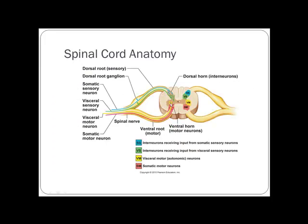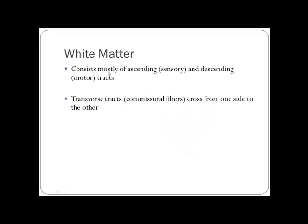White matter in the spinal cord consists of tracts. Ascending tracts carry sensory (afferent) information up to the brain. Descending tracts carry motor (efferent) information down. Transverse commissural tracts connect left and right sides. All major tracts are paired — one on each side. Most pathways cross over, some in the brainstem and some at the level of innervation.